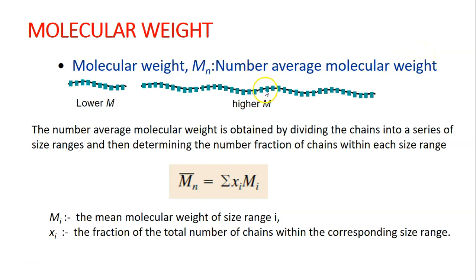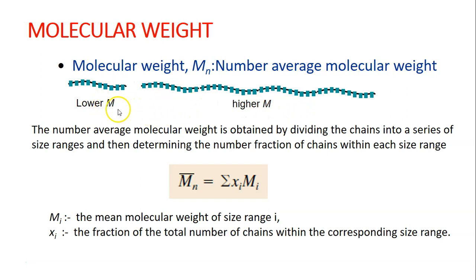This results in a distribution of various chain lengths, or what we call molecular weight. In the production of polymer, there will always be chains with lower molecular weight, bulky chains with higher molecular weight, and chains in the middle with moderate molecular weight. That is why for polymer, we are more interested in calculating the average molecular weight.